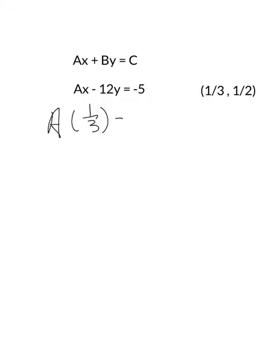The first thing I'm going to do is substitute in the point that's given. x is 1/3 minus 12y is 1/2, and that equals negative 5. So this is a point that is on that line. So this is going to help you figure out what A is.